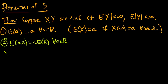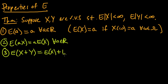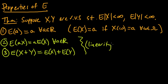Closely related to property 2, property 3 states that the expected value of a sum X plus Y equals the sum of the expected values. Together, properties 2 and 3 are called linearity — a very important property of expectation that makes it very nice to work with.